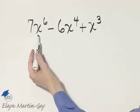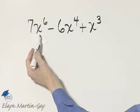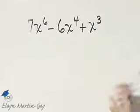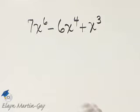Let's look at our variables raised to powers. I have x to the 6, x to the 4, and x cubed. The greatest common factor is that variable raised to the smallest exponent, so the greatest common factor is x cubed.